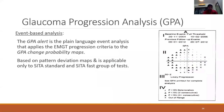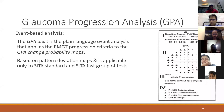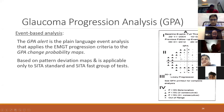Glaucoma progression analysis (GPA) is the analysis used in newer programs, replacing the older GCP. It has two groups: event-based analysis (GP alert and GCP map) and trend-based analysis. The GP alert takes two baseline reliable fields and compares any subsequent field to detect significant local progression. If any three points show statistically significant progression on two particular fields, it is tagged as possible progression. If the same defect is seen over three successive fields, it is tagged as likely progression.